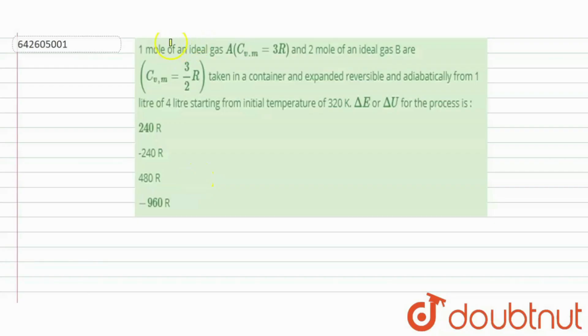Hi everyone, let's take a question here. The question says 1 mole of an ideal gas A and 2 mole of an ideal gas B are taken in a container and expanded reversible and adiabatically from 1 litre to 4 litre starting from initial temperature of 320 Kelvin. Delta U for the process is.